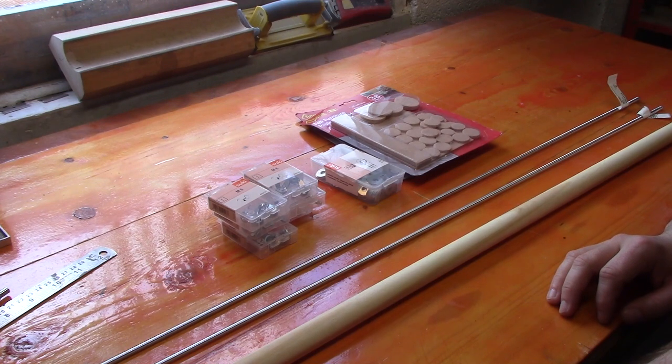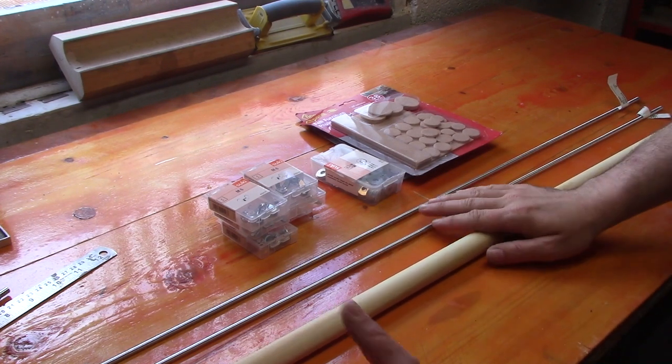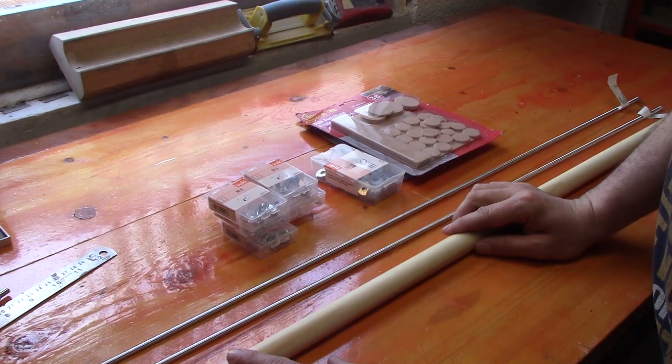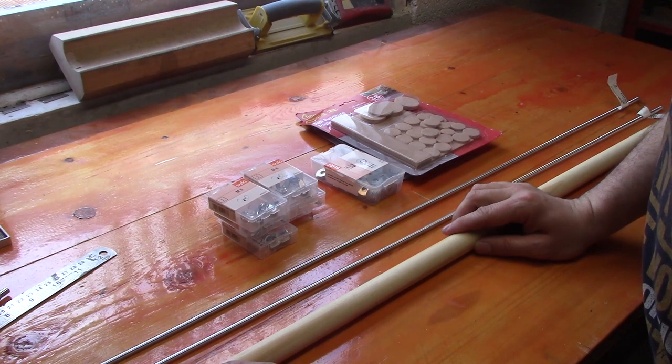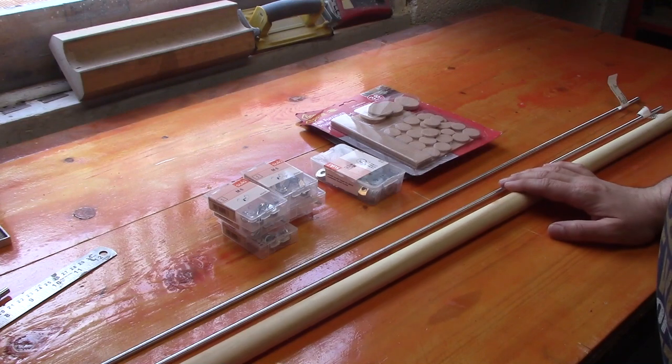So today we're going to be making some spool clamps. Spool clamps are very specialized clamps used by luthiers and they're ridiculously expensive to buy from any of the luthier supply shops, so we're just going to make them ourselves and we've only spent less than 30 euros on the materials.